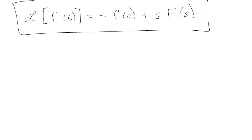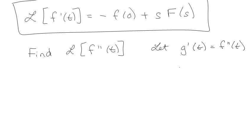Now let's say we want to find the Laplace of f double prime of t. Probably the simplest way to do this is I'm going to let g prime of t be equal to f double prime of t. And the reason I would do that is because then g of t would be equal to f prime of t, and we'll talk about that in a minute.